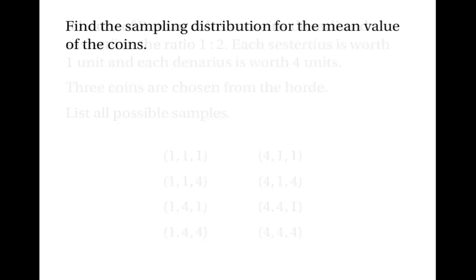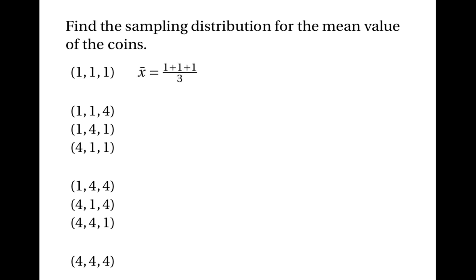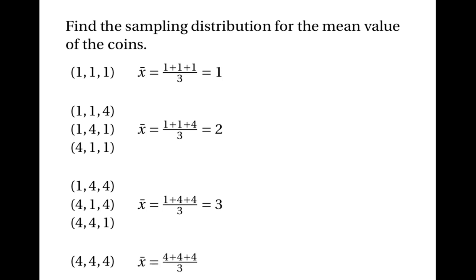Having done this, we can find the sampling distribution for the sample mean. We divide the samples into categories by their mean. The sample mean for (1,1,1) is one plus one plus one over three, which is one. For the category with two cistercii and one denarius, it's one plus one plus four over three, which is two. For one cistercius and two denarii, it's one plus four plus four over three, which is three. And for (4,4,4), the sample mean is four plus four plus four over three, which is four.